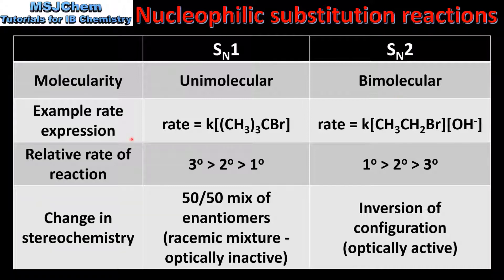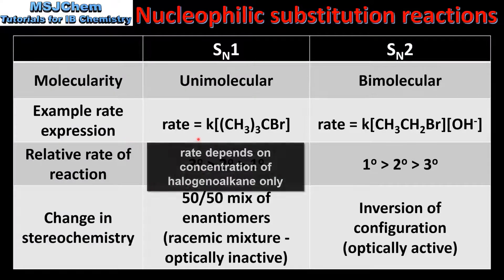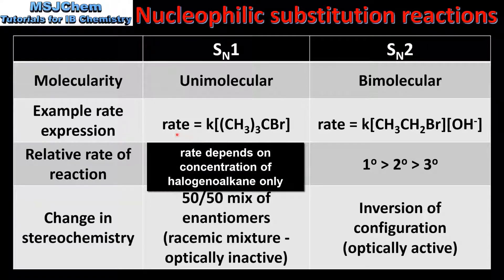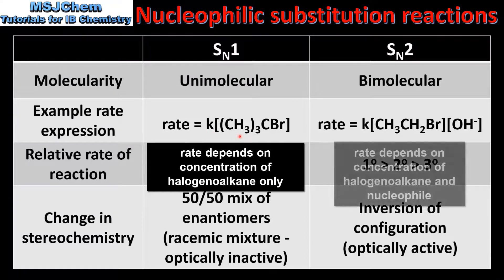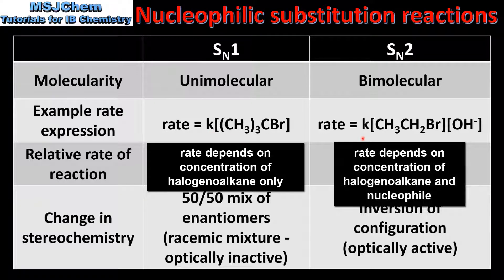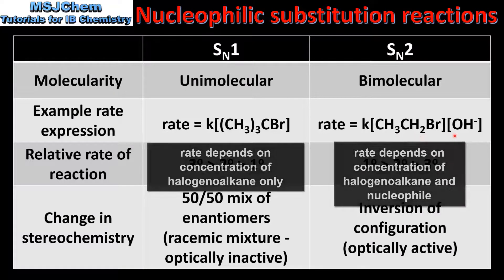Next we look at an example rate expression. For SN1 we have rate equals k and the concentration of the halogeno alkane only. For SN2 we have rate equals k and the concentration of the halogeno alkane and the nucleophile.